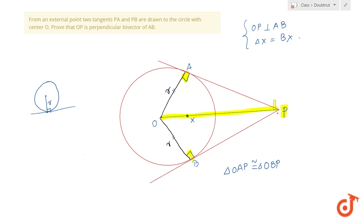By RHS, these two triangles are congruent. Now if they are congruent, then from CPCT, these two angles must be equal. I can say that angle AOP must be equal to angle BOP, corresponding parts of congruent triangles. That's your step one.